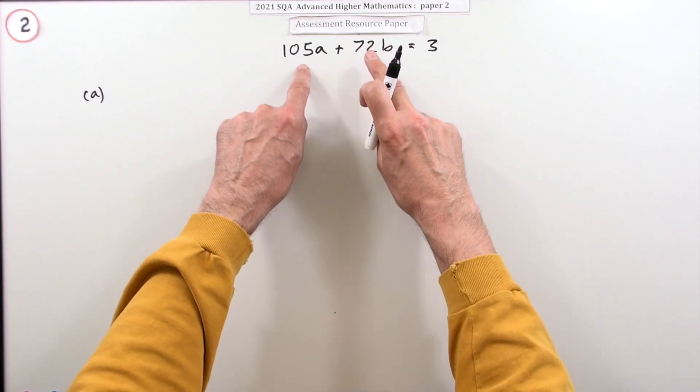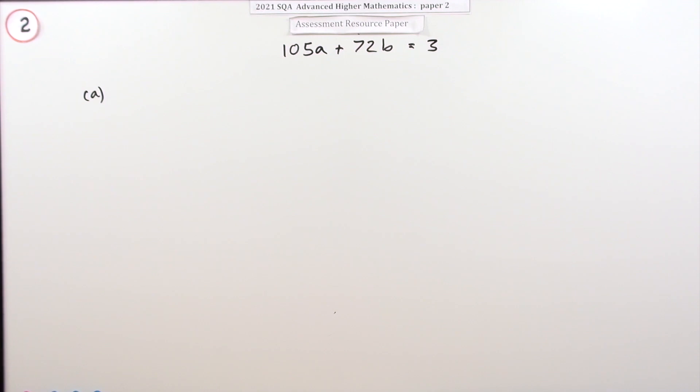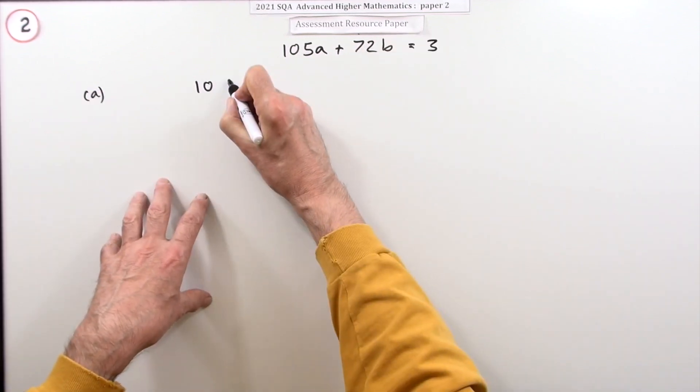That means you need to find the greatest common divisor of 105 and 72. You can probably guess it's three, but you have to go through all the stages because you need to go through them in reverse.